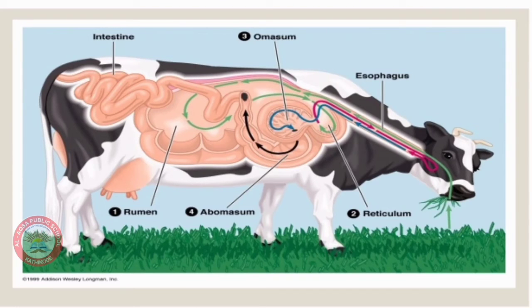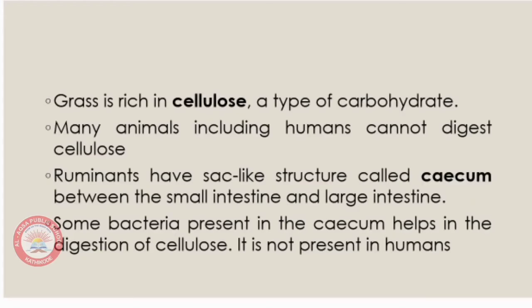Observe this picture to understand the direction of how grass is digested inside the cow. Grass is mainly made up of a carbohydrate called cellulose. Most animals, including humans, cannot digest cellulose. However, in ruminants there is a sac-like structure called the cecum, present between the small intestine and the large intestine, where bacteria help digest cellulose — bacteria not present in humans.